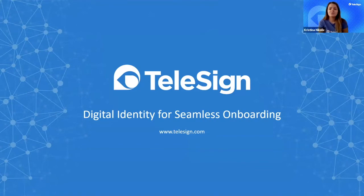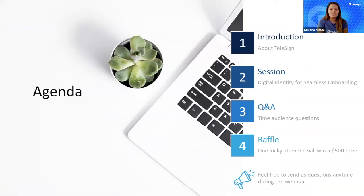Today's session will be recorded and the video will be available after the session. I'd like to walk you through the agenda we prepared for today. First, we will introduce Telesign very briefly, and then we will talk about how digital identity solutions can be used to reduce onboarding risks and provide a seamless experience. Throughout the session, you can ask questions using the Q&A section at the bottom toolbar. At the end of the webinar, there will be a raffle where the first correct answer will receive a prize valued at $500.